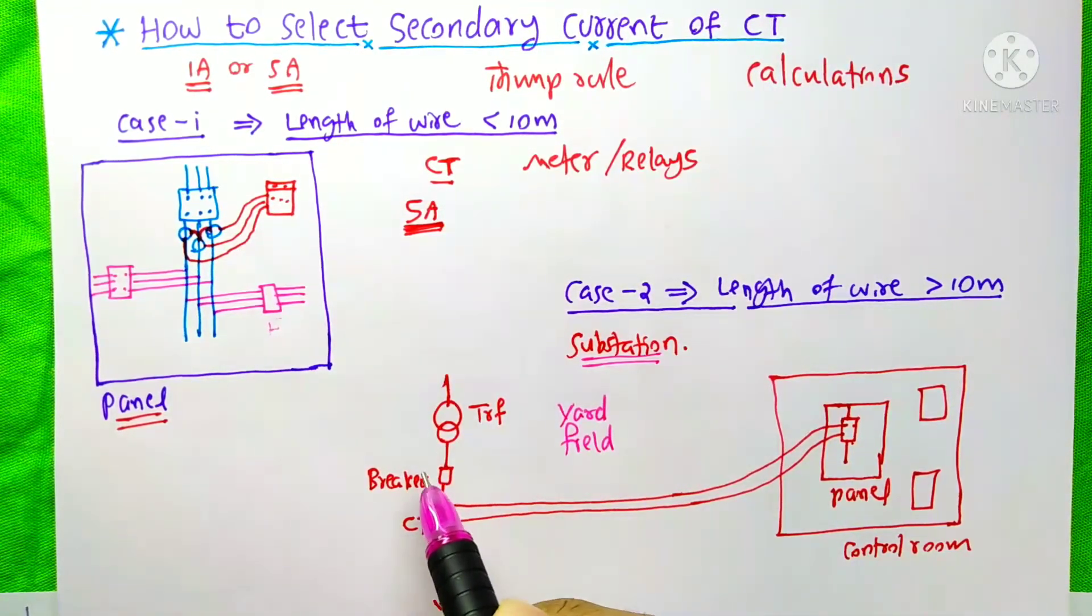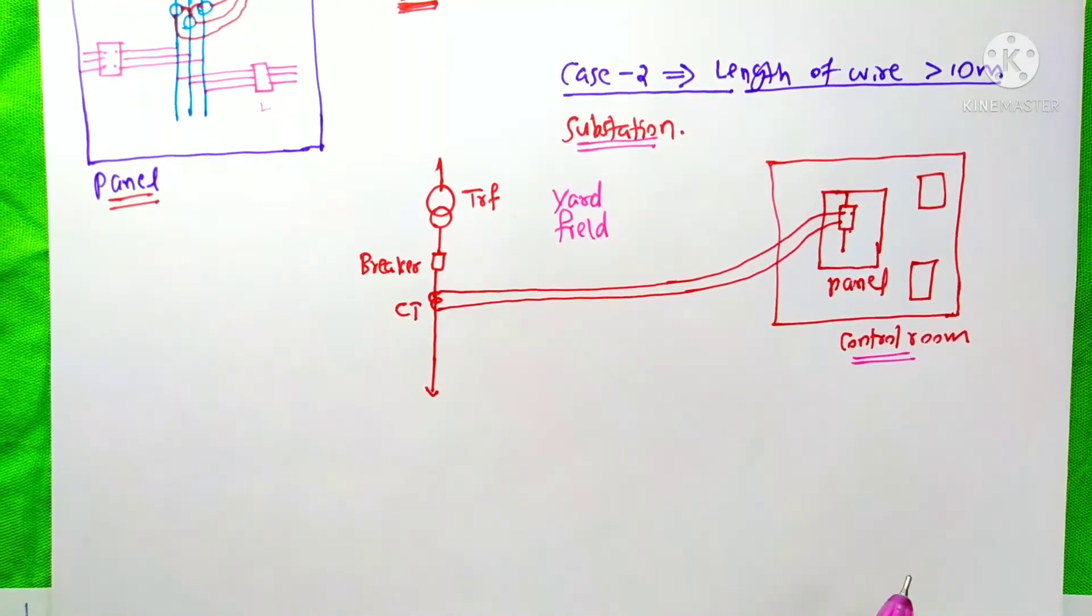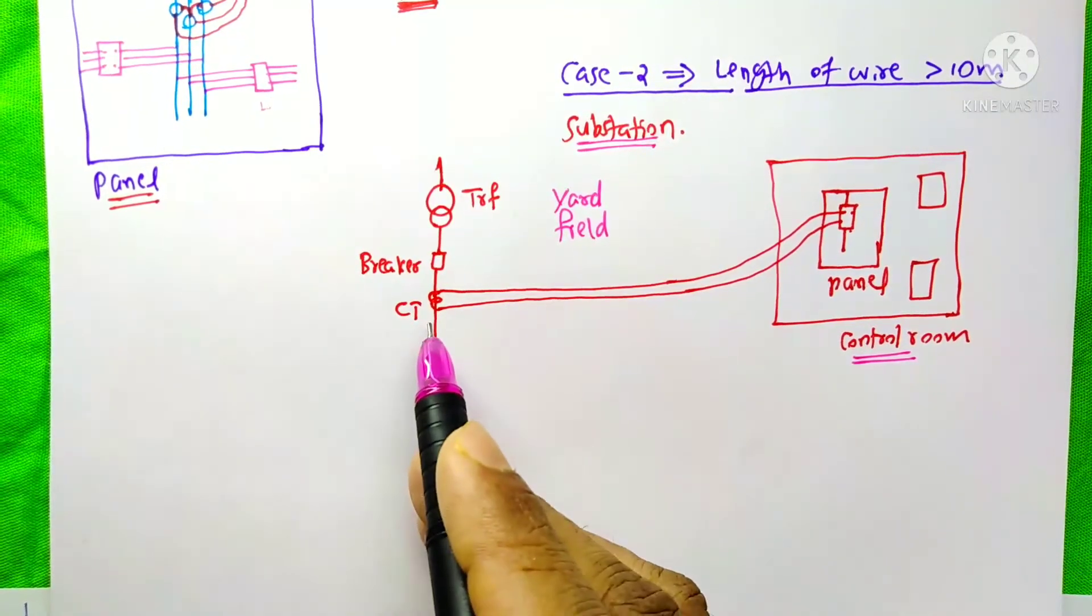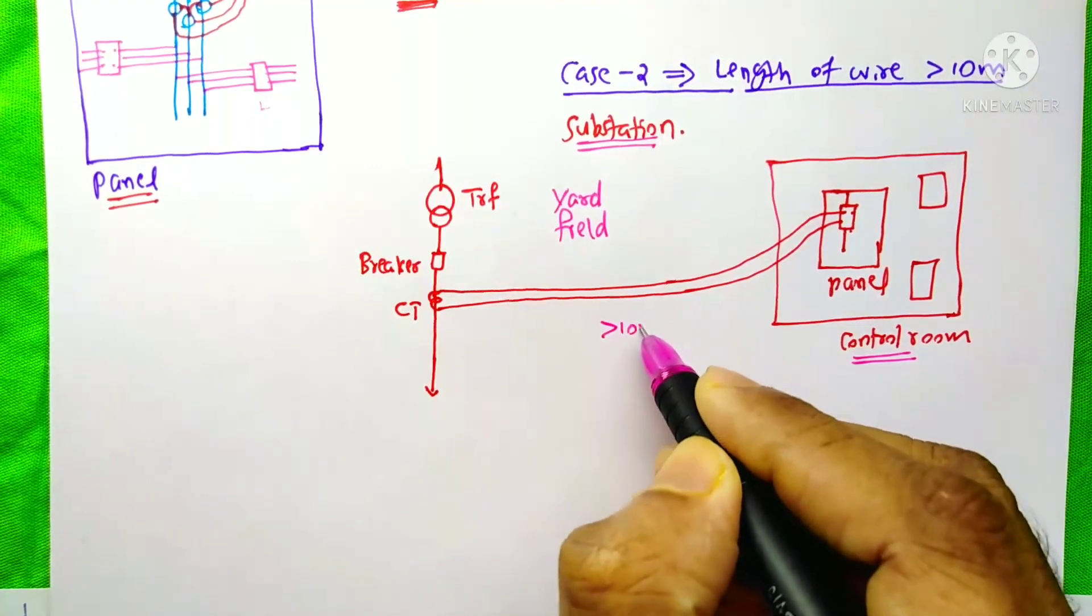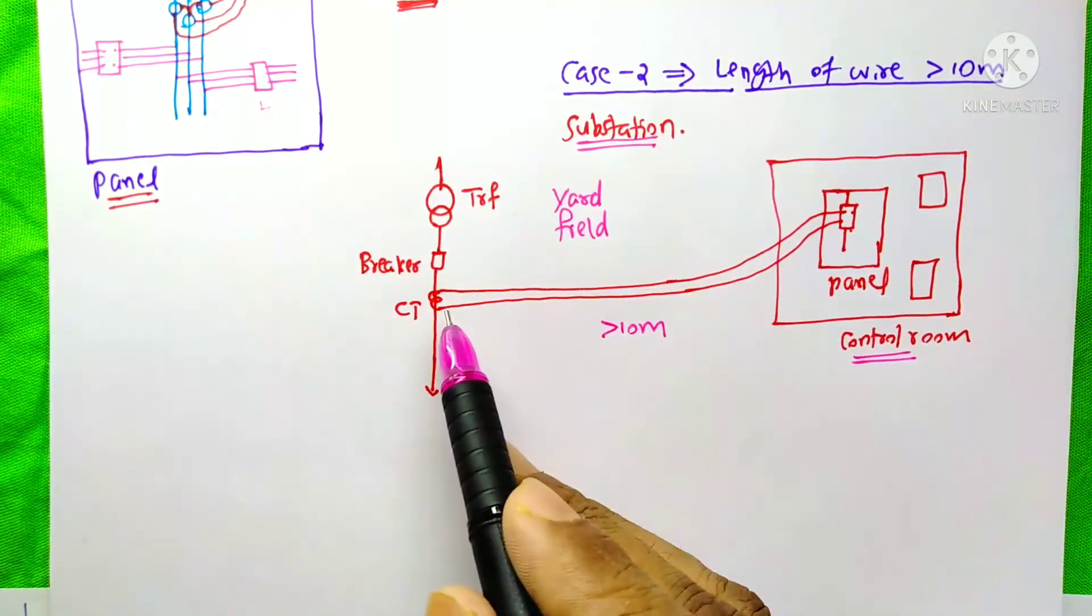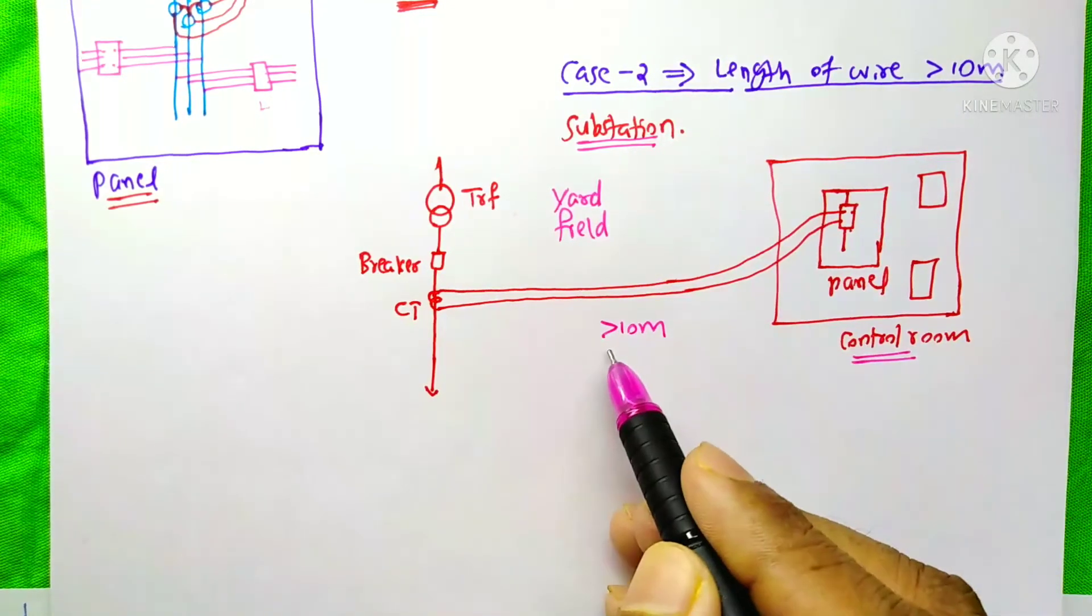Here we have the transformer and breaker current transformer. The wires from the secondary of this current transformer are taken to the control panel in the control room. In most cases, the distance between this CT and this electrical panel would be greater than 10 meters. That means the length of the wire will be more than 10 meters.